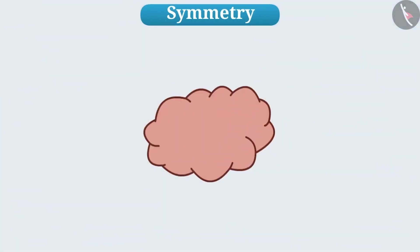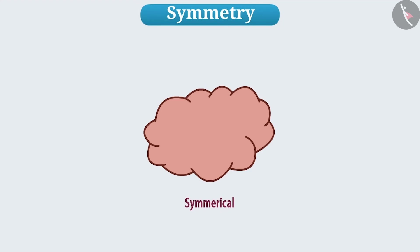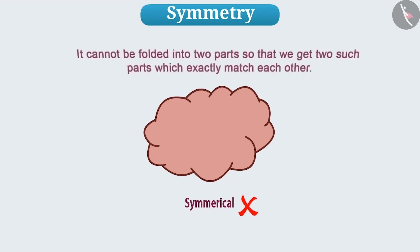Now, look at this shape. Is this shape symmetrical? Give it a thought. Absolutely right! It is not a symmetric shape. This is because we cannot in any way bend it into two parts so that we get two such parts which exactly match each other.